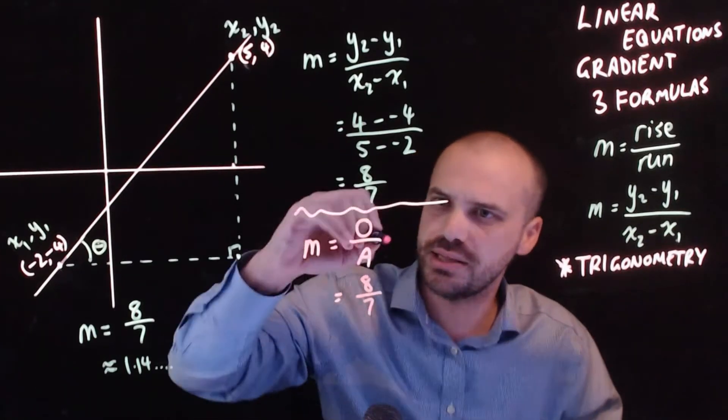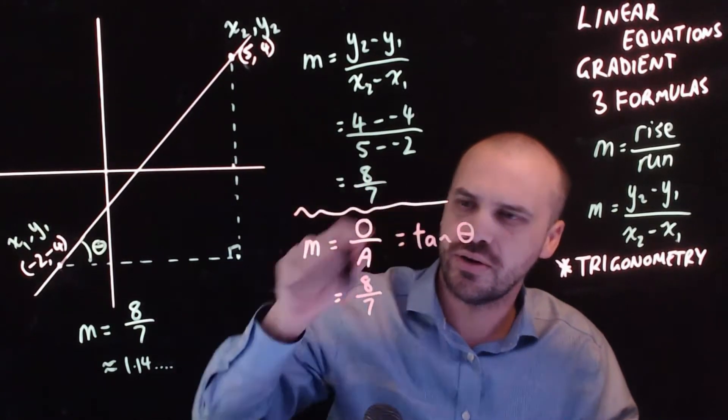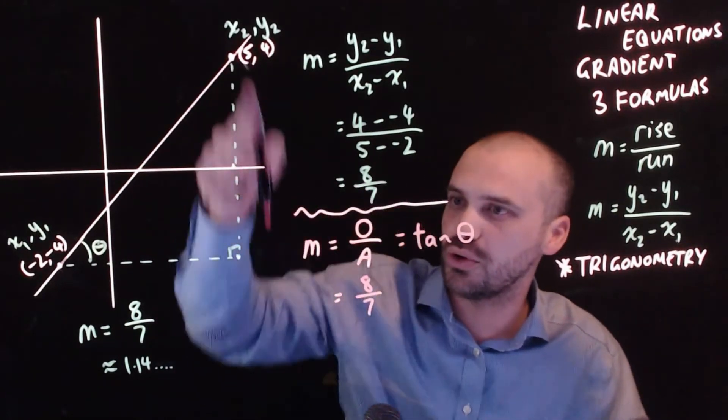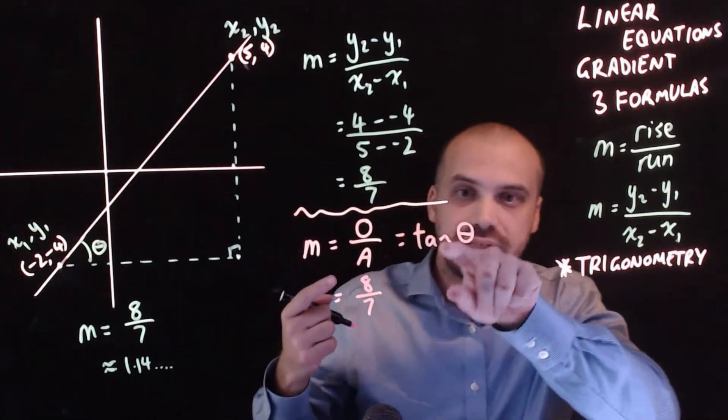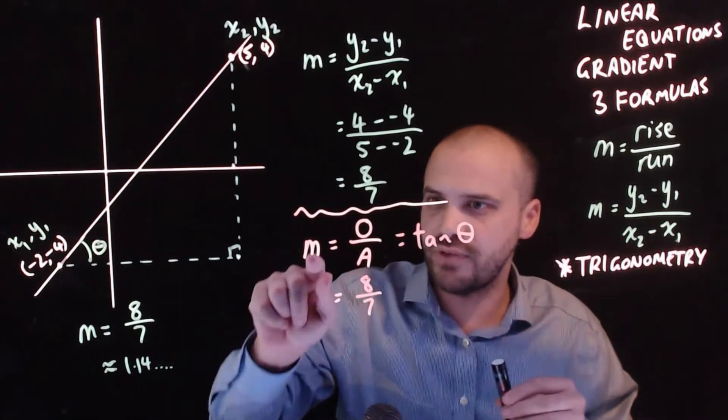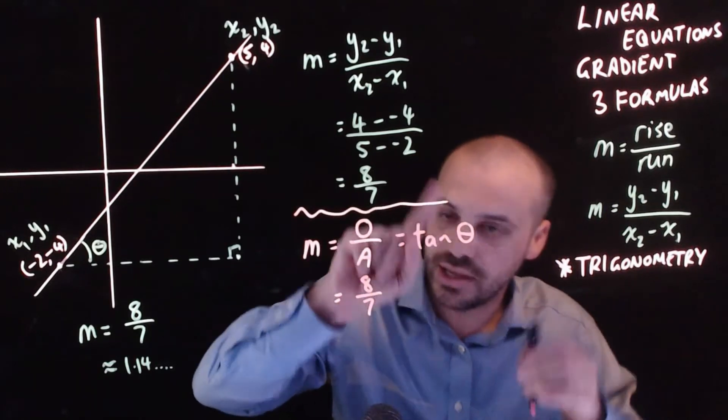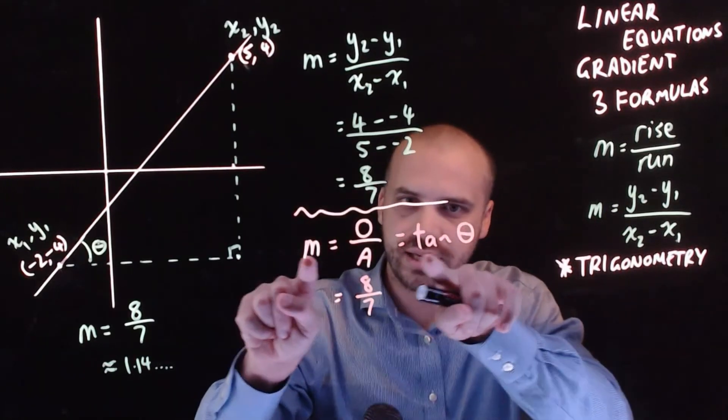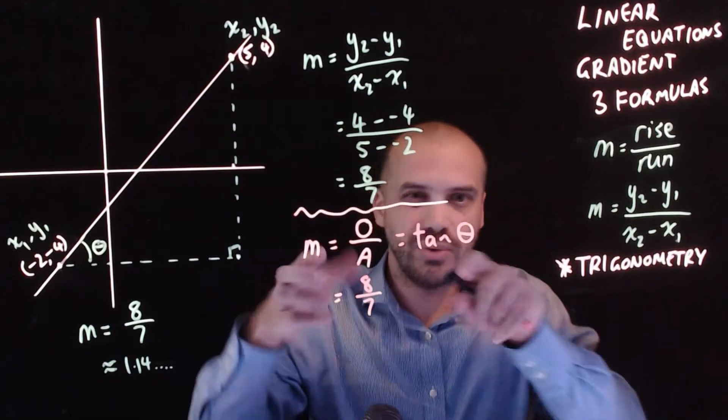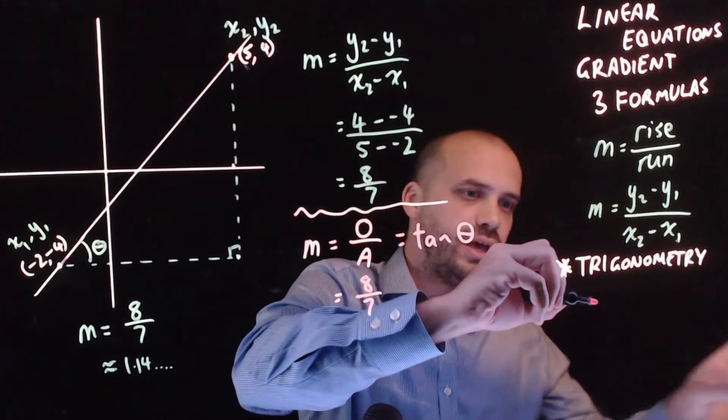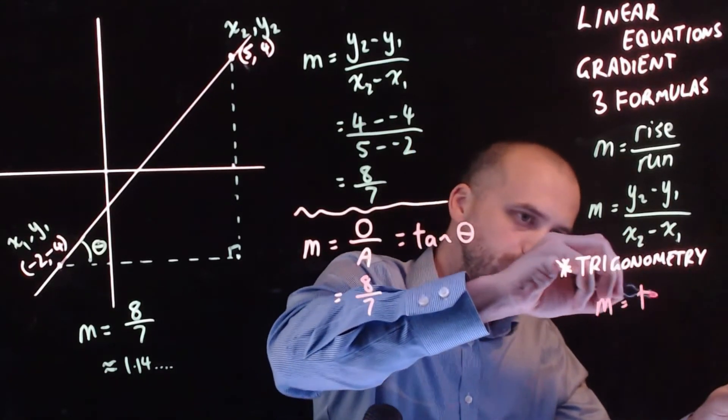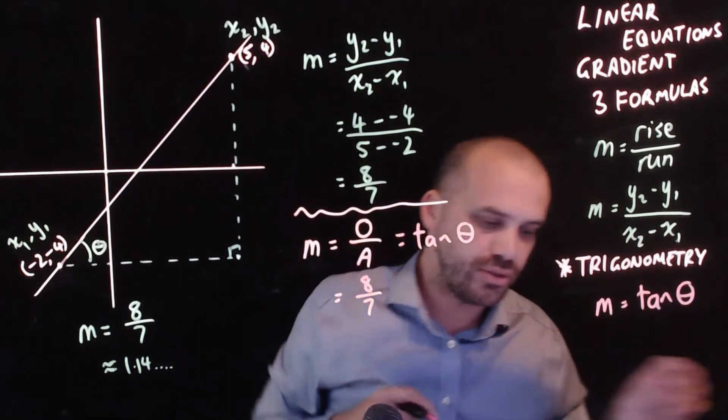Which means that we get this neat thing here where the gradient is equal to opposite over adjacent which is also equal to tan theta. Now if m is equal to this is equal to this that means that m is equal to this. We can essentially cut out the middleman and we have our new formula. m is equal to tan theta.